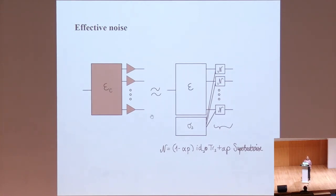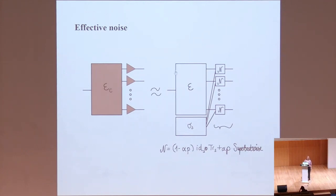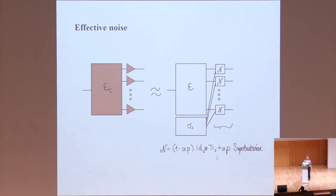We can prove for these interface triangles an effective channel theorem where we can view them as an effective channel that acts with probability one minus some constant times P. With this probability, everything is fine and it acts exactly as it should, with the normal encoder. And with some probability constant times P, you get really bad and horrible noise. This is kind of the best we can hope for, because the last gate will have with probability P some error, giving an effective channel with some probability P.